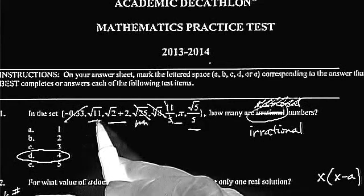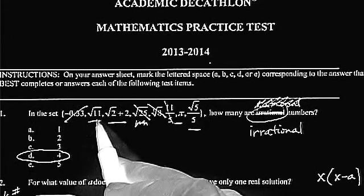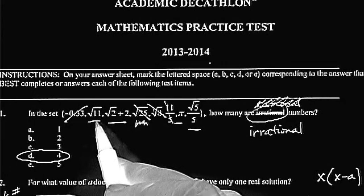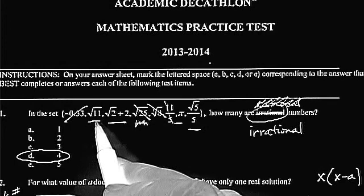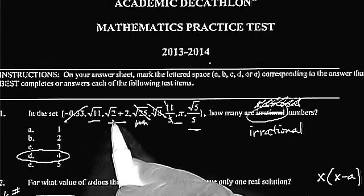However, anything that cannot be written as a fraction, like the square root of 11, that's a prime number. Square root of a prime number is never going to be a nice number. In fact, a square root of any non-perfect square, like the square root of 2.